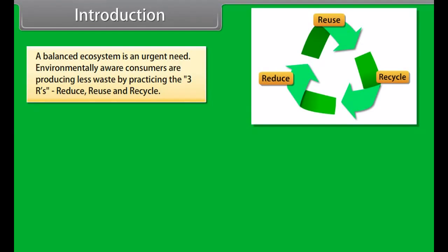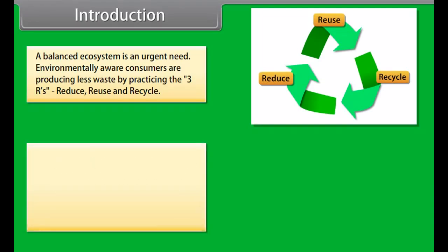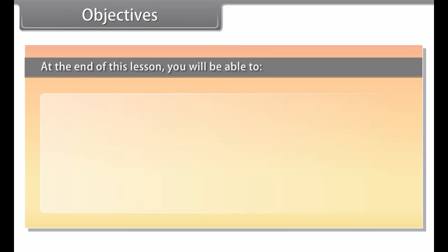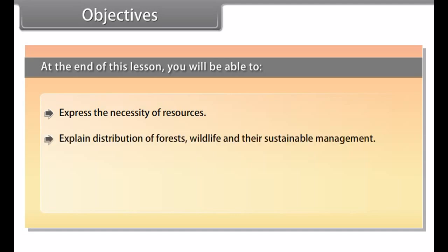Environmentally aware consumers are producing less waste by practicing the three R's: reduce, reuse and recycle. They are buying products that are less toxic or contain less packaging, using reusable containers and other reusable items, maintaining and repairing products, participating in recycling programs and buying products made from recycled materials.